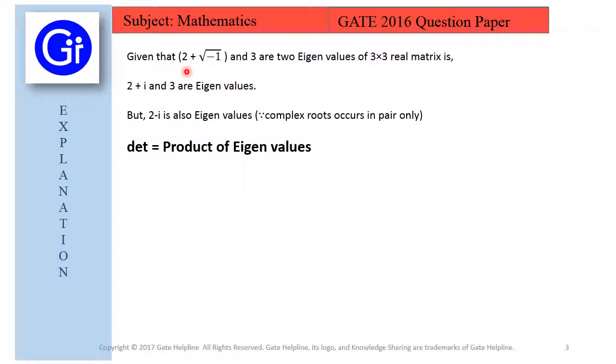So we can write this complex number 2 plus under root minus 1 as 2 plus i and 3 are the two eigenvalues we have. But as we know that 2 minus i is also eigenvalue because complex roots occur in pair only.